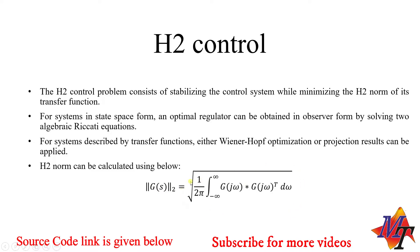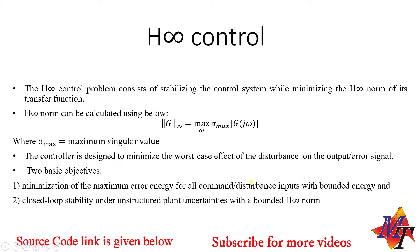If we have a plant transfer function G(s) and we calculate the H2 norm, which can be described by this equation, then by minimizing this norm value we can obtain the controller's transfer function. For a system described by a transfer function, we can use Wiener-Hopf optimization or projection results. For a system in state space form, we can use an optimal regulator obtained in observer form by solving two algebraic Riccati equations. This is basically H2 control.